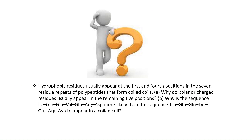A question for you: hydrophobic residues usually appear at the first and fourth positions in the seven-residue repeat of polypeptides that form coiled-coils — why do polar or charged residues usually appear in the remaining five positions? Also, why is sequence one more likely than sequence two to appear in a coiled-coil structure? Let me know in the comments. If you found the video informative, please like, share, and subscribe, and hit the bell icon for notifications. Stay safe, stay happy.